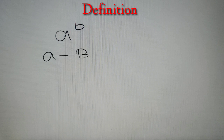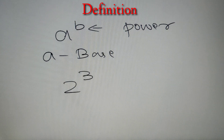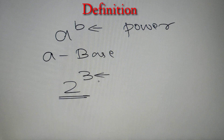Starting with the definition of indices: indices is the plural format of index and it is nothing but the power to which a number is raised. So suppose we have a number A raised to power B, then A is the base of the number and B is the power. A power is referred to as index, and that's why the name of the chapter is indices. For example, if we have 2 to the power 3, then 2 is the base and 3 is the index.